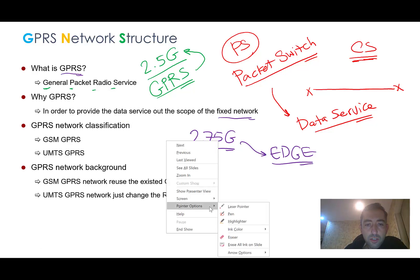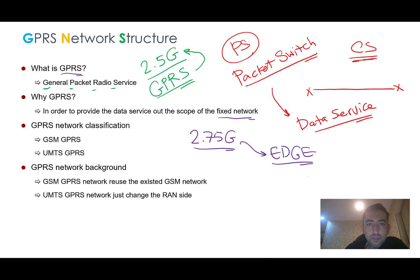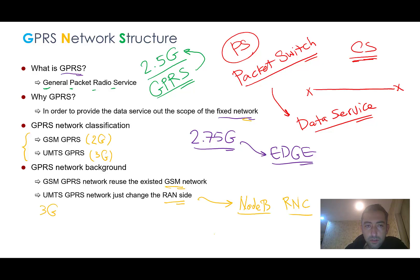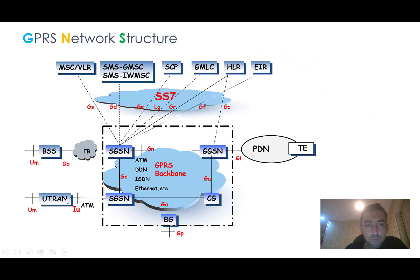GPRS was introduced in order to provide data service beyond the scope of fixed networks — previously, data services were only delivered via fixed networks. The GPRS network is used in both 2G and 3G generations, sharing the same PS core. The GPRS network uses the existing GSM network infrastructure; for 3G, only the RAN side is changed, where we use Node B and RNC.